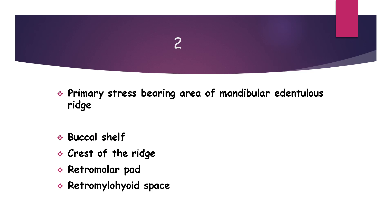Coming to the second question: what is the primary stress bearing area of the mandibular edentulous ridge? The options are buccal shelf, crest of the ridge, retromolar pad, and retromylohyoid fossa.